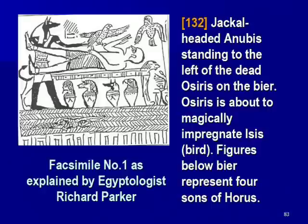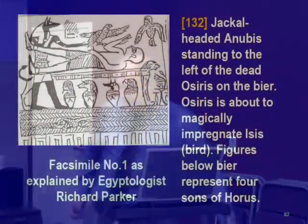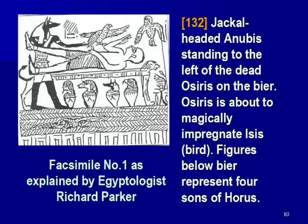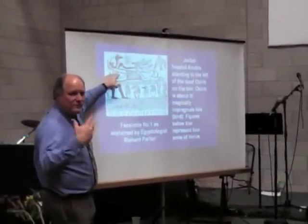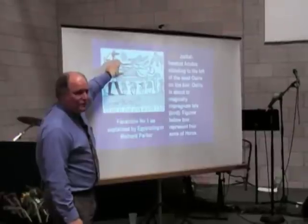First of all, this is the facsimile as explained by Egyptologist Richard Parker — now this is a guy who does know what he's talking about. He will say that what we have here is something not all that unusual: it's a funerary text taken from the Sensen text, or the Book of Breathings, which is not all that uncommon. But if you look carefully here, we don't see the drawing looking quite the same as Joseph Smith said. We have, for instance, instead of a human head, the head of a jackal — which, if you know anything about Egyptian burial rituals, would be the Egyptian god Anubis.